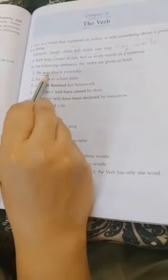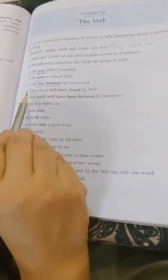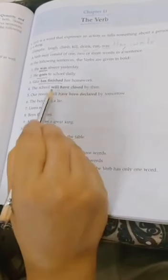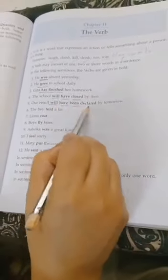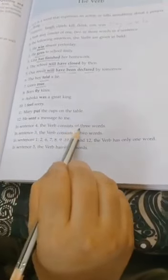A verb may consist of one, two, or more words. In the following sentences, the verbs are given in bold: He was absent yesterday—'was'. He goes to school—'goes'. Gita has finished her homework—'has finished', two words. The school will have closed by then—'will have closed', three words. Our result will have been declared by tomorrow—four words. The boy told a lie—'told'. Lion roars—'roars'. All these are examples of verbs.